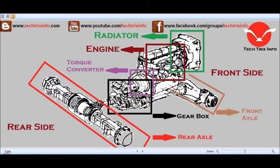After the engine comes the torque converter — it's a fluid coupling unit. From the torque converter, the drive goes towards the gearbox. Here we have the gearbox, and from the gearbox, through the propeller shaft, the drive reaches the rear axle. This is the rear axle — this is the automobile part of a JCB machine which helps it to drive through the road for transportation purposes.